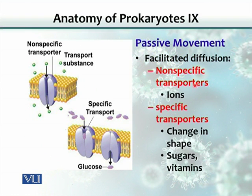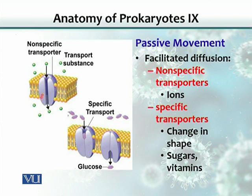There are non-specific transporters, meaning some transporters can transport two or three different kinds of molecules. They are not specific to just one kind — many different kinds of molecules can move through them. So it is called a non-specific carrier or non-specific transporter.